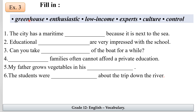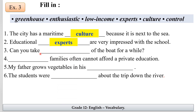Exercise three: fill in with greenhouse, enthusiastic, low income, experts, culture, or control. Number one: the city has a maritime culture because it's next to the sea — the answer is 'culture.' Number two: educational experts are very impressed with the school — the answer is 'experts.' Number three: can you take control of the boat for a while? — the answer is 'control.' Number four: families often can't afford private education — they don't have enough money, so the answer is 'low income.'